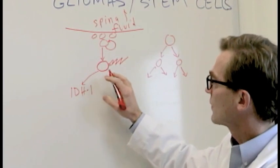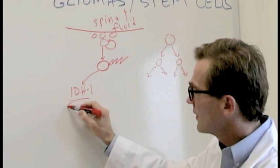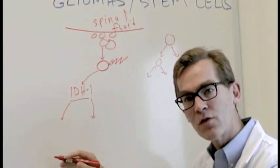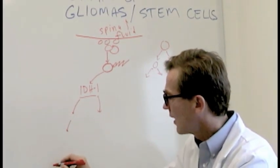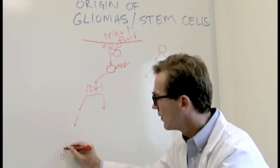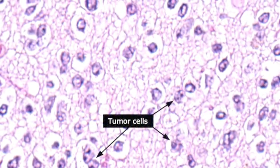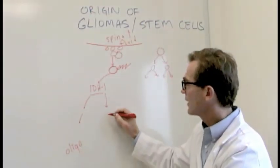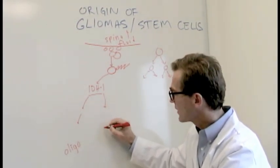We believe that in younger people with gliomas, they often develop an IDH1 mutation. And then these cells can go on to acquire multiple different other mutations over years. And they can either go in a pathway that leads to an oligodendroglial tumor or an oligo, or they can have a pathway that leads to an astrocytic type of tumor called an astrocytoma.